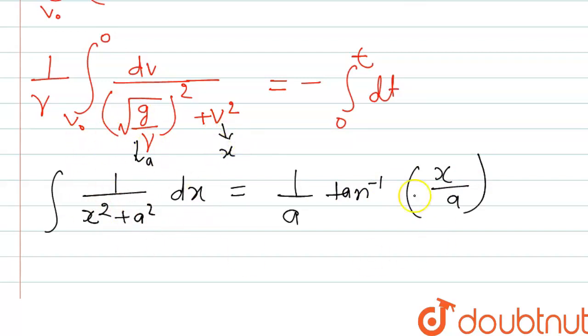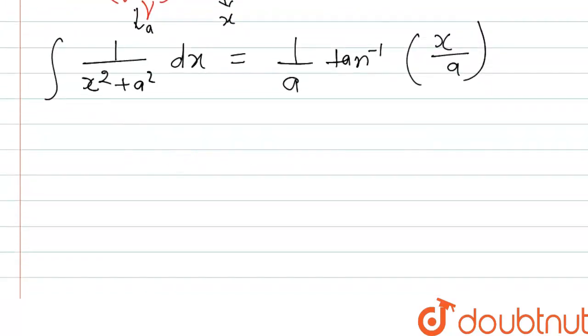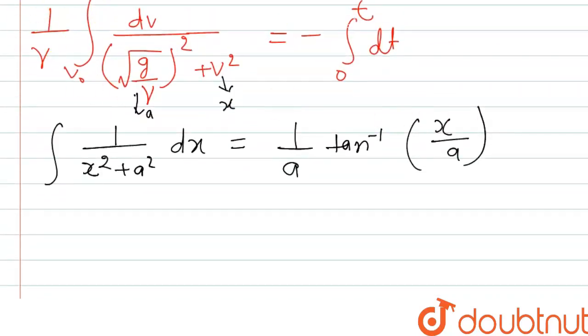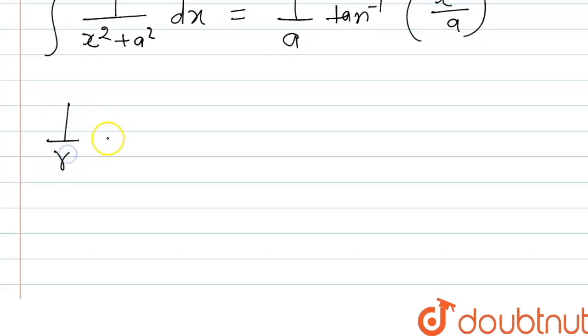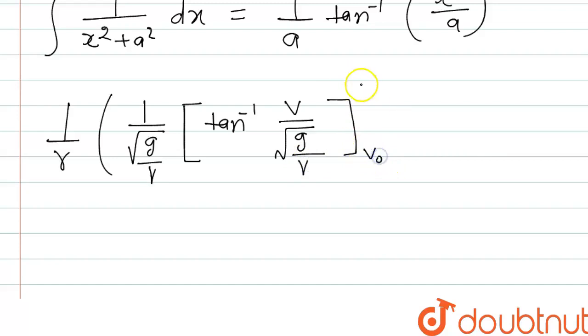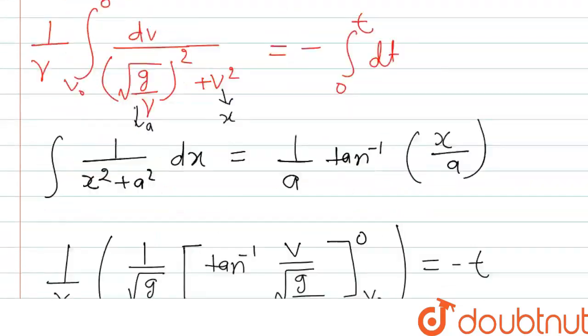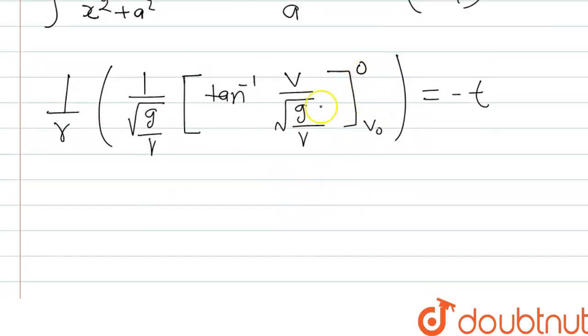So if we write in this form, this equation we can write the left side: one by gamma into one by root g by gamma into tan inverse v by root g by gamma. And if we put the limit, the initial is v naught and final v is zero. This will be equal to minus t. The integration of dt. Now if we put the limit, then this will be one by root under g into gamma and the bracket. It will be zero minus tan inverse.